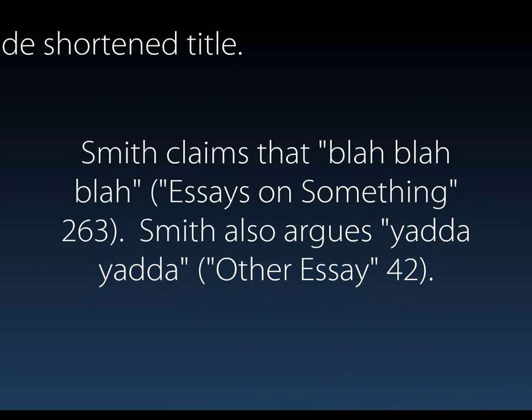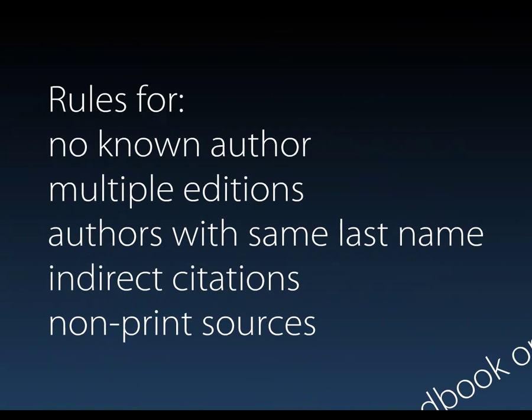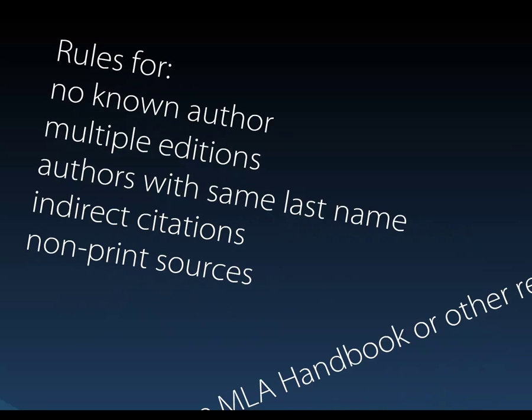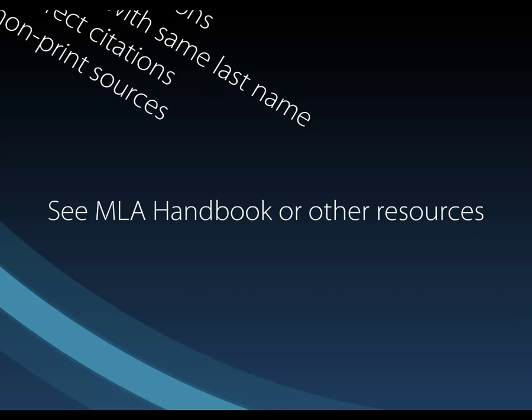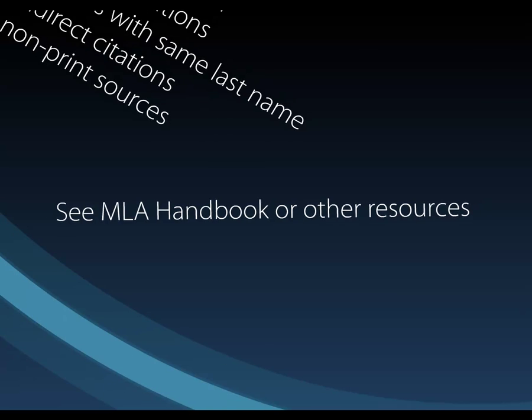For example, if you were writing a paper where you had two works by Smith that you were citing, you would include shortened titles like the examples shown here. It should also be noted that there are extra rules for when you are citing from a book with no known author, a book with multiple editions, authors with the same last name, indirect citations, or non-print sources. If any of this is the case, please see the MLA handbook or the other resources covered at the end of this video.